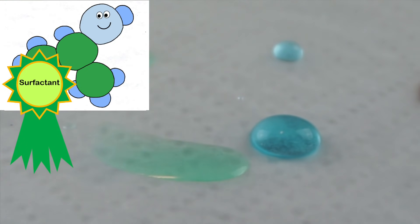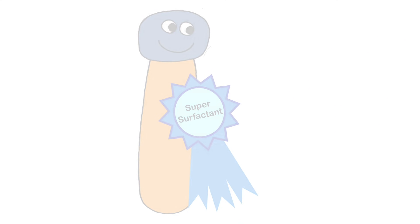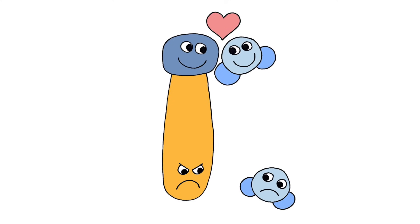Rubbing alcohol lowers the surface tension of water. And so does soap. Soap is a really neat molecule because half of it loves water, and the other part does not like water at all. We call that hydrophobic.